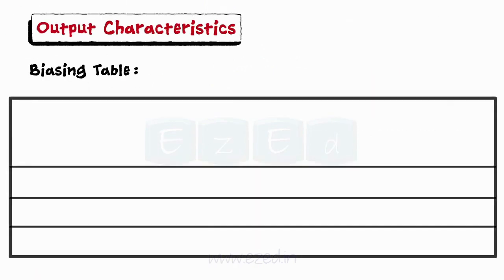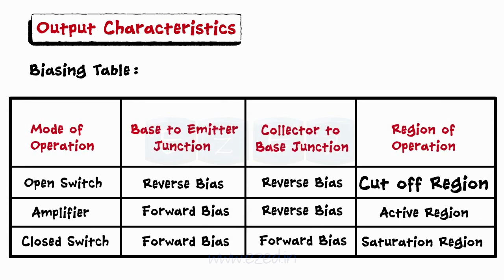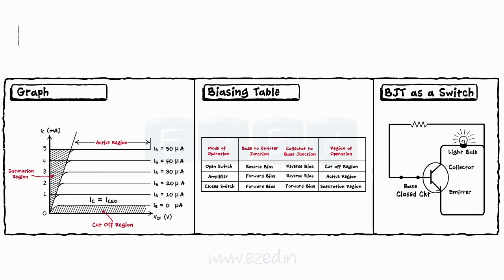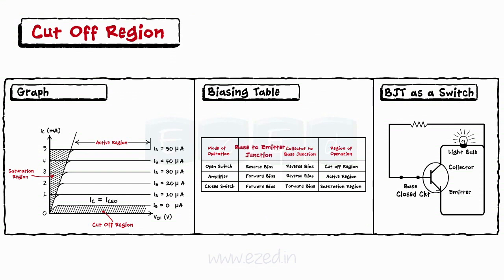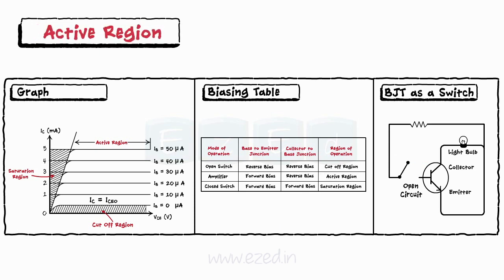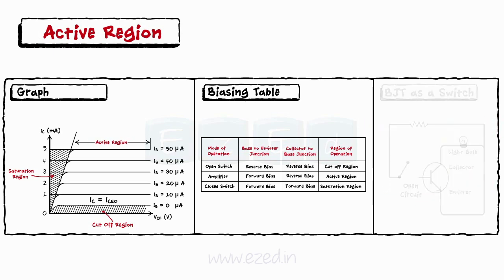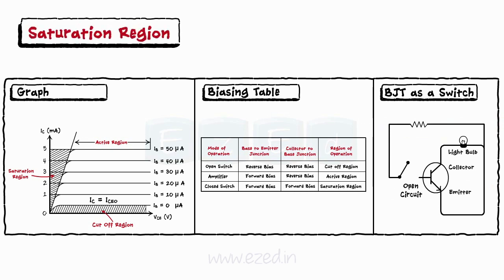From the graph we define three main regions in which BJT is operated: active region, cutoff region, and saturation region. In the cutoff region, both the base-to-emitter and collector-to-base junctions are reverse biased, so base current equals zero and collector current equals reverse leakage current — the transistor acts as an open switch. In the active region, base-to-emitter is forward biased and collector-to-base is reverse biased, so the transistor acts as an amplifier. In the saturation region, both junctions are forward biased, collector current increases rapidly with VCE, and the transistor acts as a closed switch.